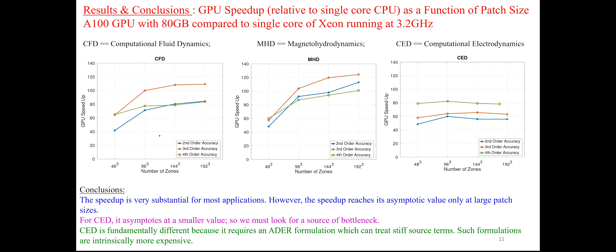The results are actually very good for many of the applications we're trying. Here you're seeing the A100 GPU performance as a function of a single Xeon core — the GPU speedup relative to a single CPU core as a function of the number of zones in each of the patches moved across. You can see the speedup is pretty good: literally 85 to 110 times speedup for hydrodynamics applications.